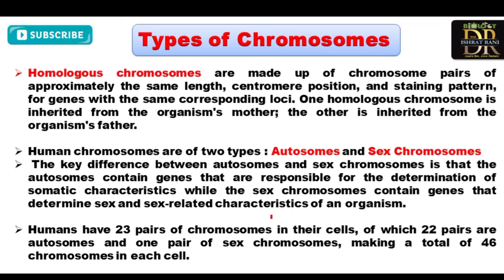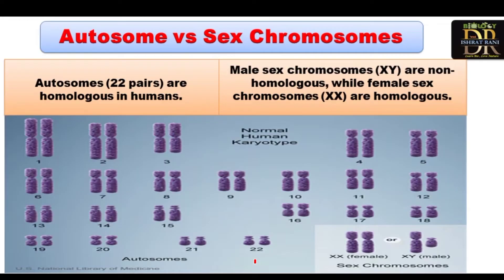In human beings we have 23 pairs of chromosomes: 22 pairs of autosomes and one pair of sex chromosomes. In females there are two X chromosomes, while in males there is one X and one Y chromosome.